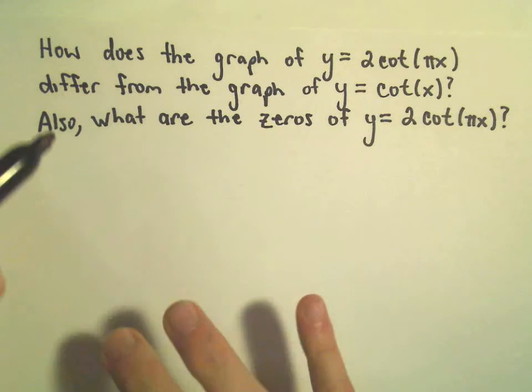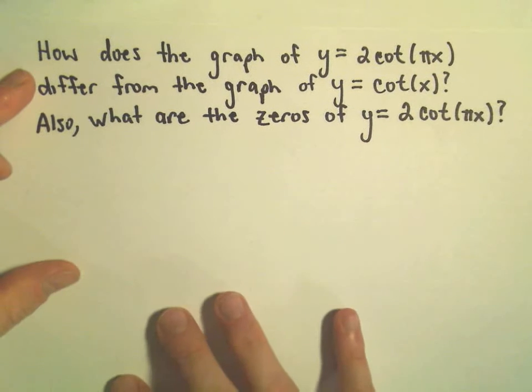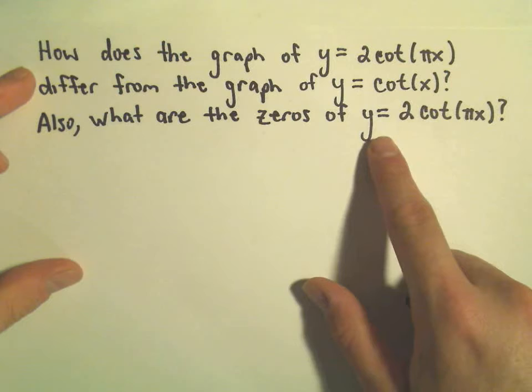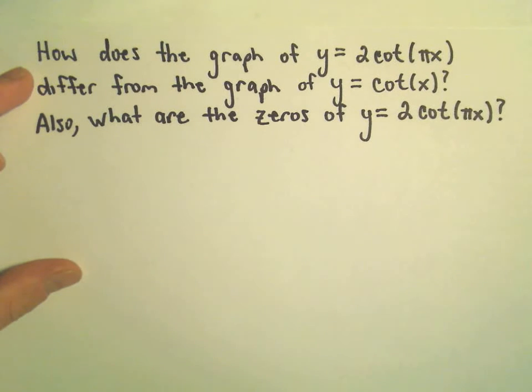Maybe let's first address this question about how these graphs differ. Maybe to figure out the zeros, we don't have to graph it, but let's go ahead and actually graph 2cot(πx) as well.